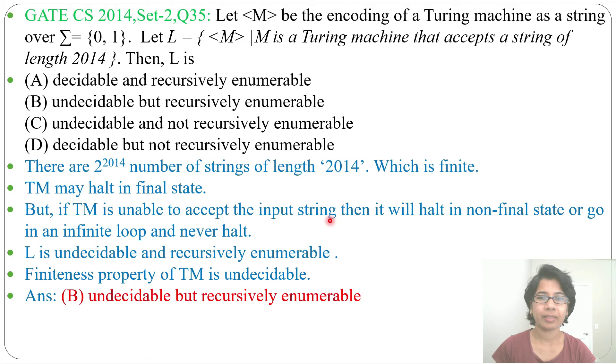I already discussed during lecture that which properties of Turing machine are undecidable. Just go through that lecture. You can easily solve this. This is a finiteness. Finiteness is undecidable. That's why it is undecidable and recursively enumerable. Thank you.